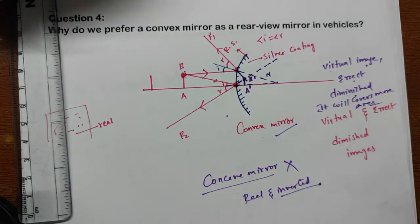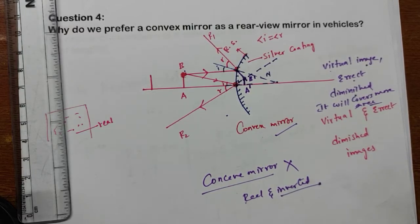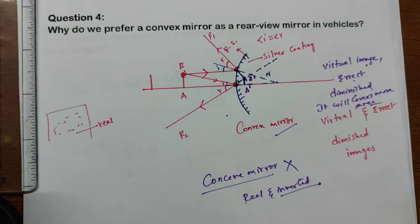These are the main reasons we prefer the convex mirror as a rear view mirror in vehicles — it covers more area, which allows the driver to see most of the traffic behind them. Thank you for watching.